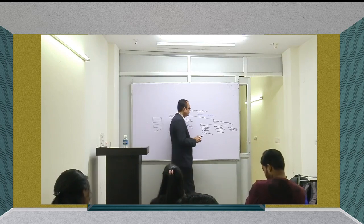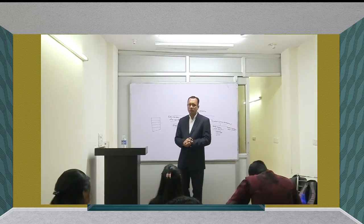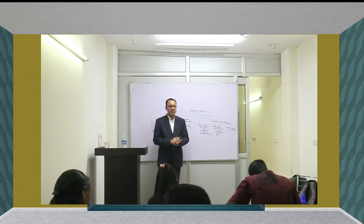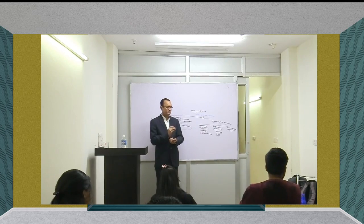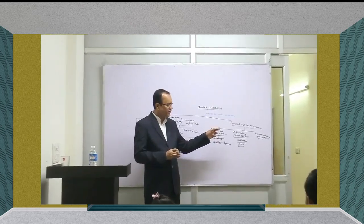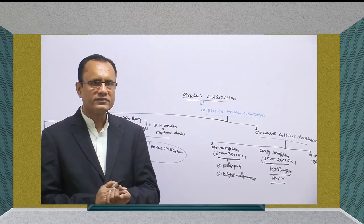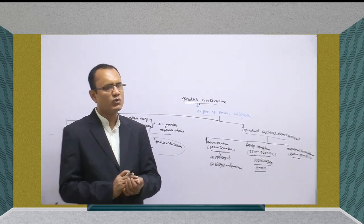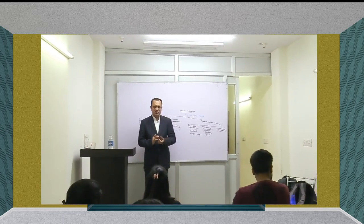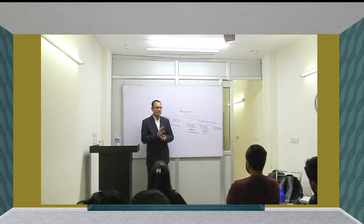The second important thing is Amri, which is situated in Sindh province of Pakistan. From Amri, we got a granary in that stage. The granary gives us insight that there was really more surplus production in that stage of cultural development.